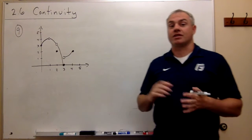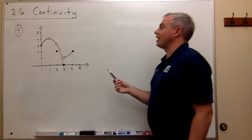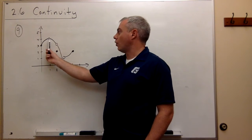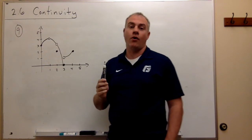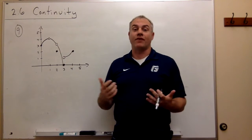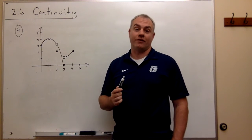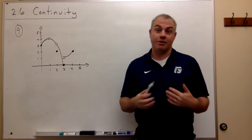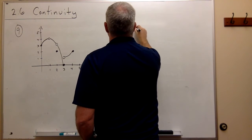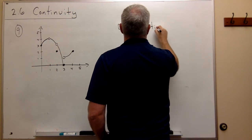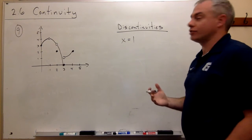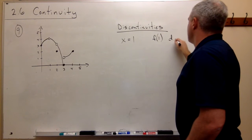Let's look at this graph and identify suspicious points. The first suspicious point is x equals one because of this hole. The question is: does that hole make this function discontinuous at one? The first question we ask is does it have a functional value at one — and it does not. So it cannot possibly be continuous at one. This is a discontinuity at x equals one because f(1) does not exist.